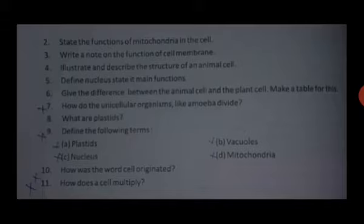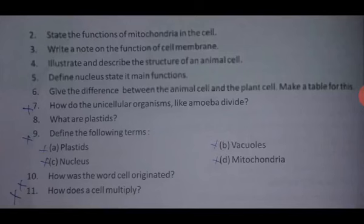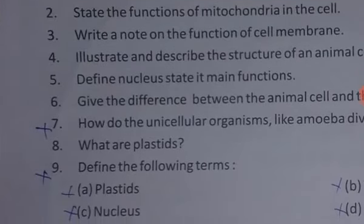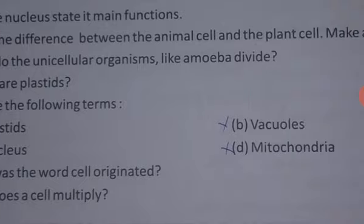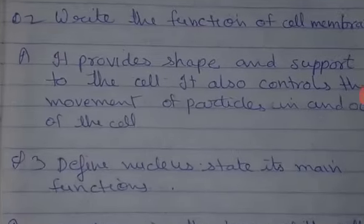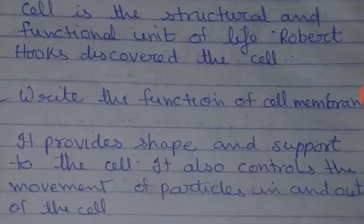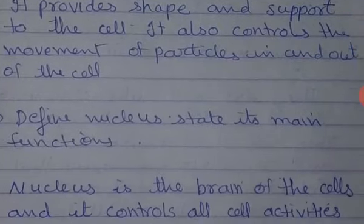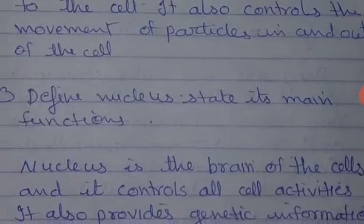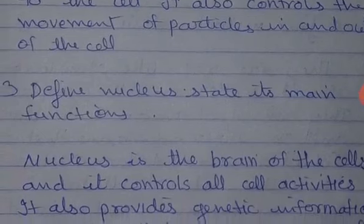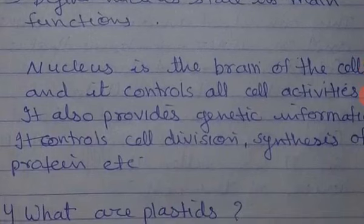Now we will come to the question and answer. First: what is the cell, who discovered it? Cell is the structural and functional unit of life. Robert Hooke discovered the cell. Second: write the function of the cell membrane. It provides the shape and support to the cell. It also controls the movement of particles in and out of the cell.